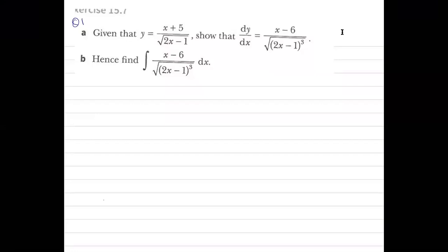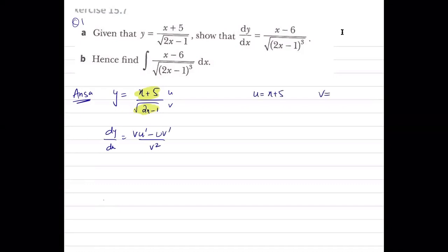Given y = (x+5)/√(2x-1), use the quotient rule to differentiate. Let u = x+5, v = (2x-1)^(1/2). Then u' = 1, and v' = (1/2)(2x-1)^(-1/2) · 2 = 1/√(2x-1). Applying dy/dx = (v·u' - u·v') / v².